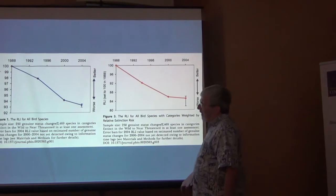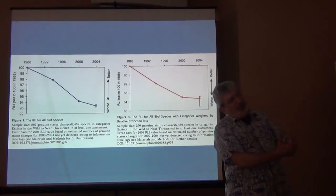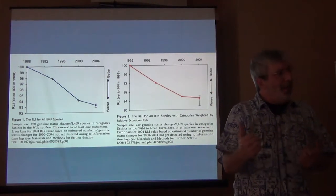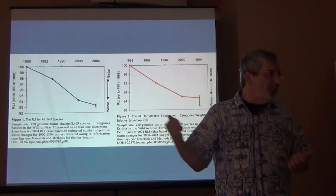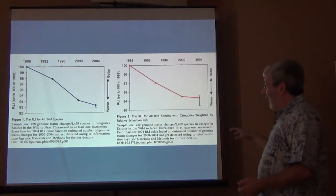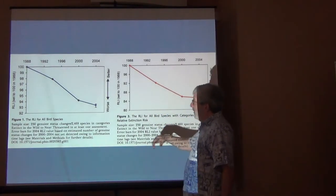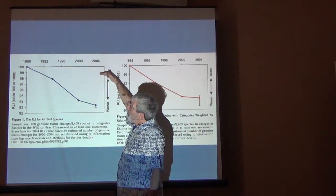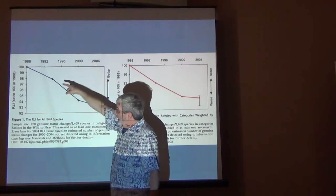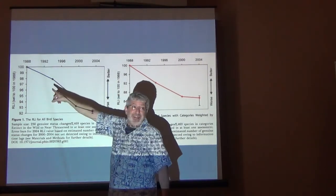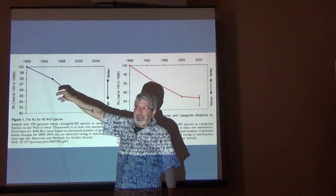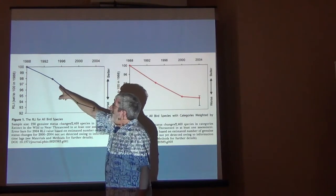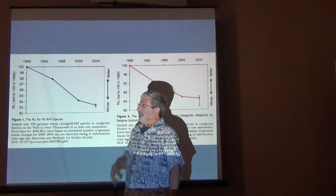The Red List Index summarizes how many species are going towards extinction and how many are going towards full recovery. They build an index where 100% would be getting better uniformly, scaled to what was going on in 1988 — the first conservation status assessment globally for birds. And you can see it coming down.